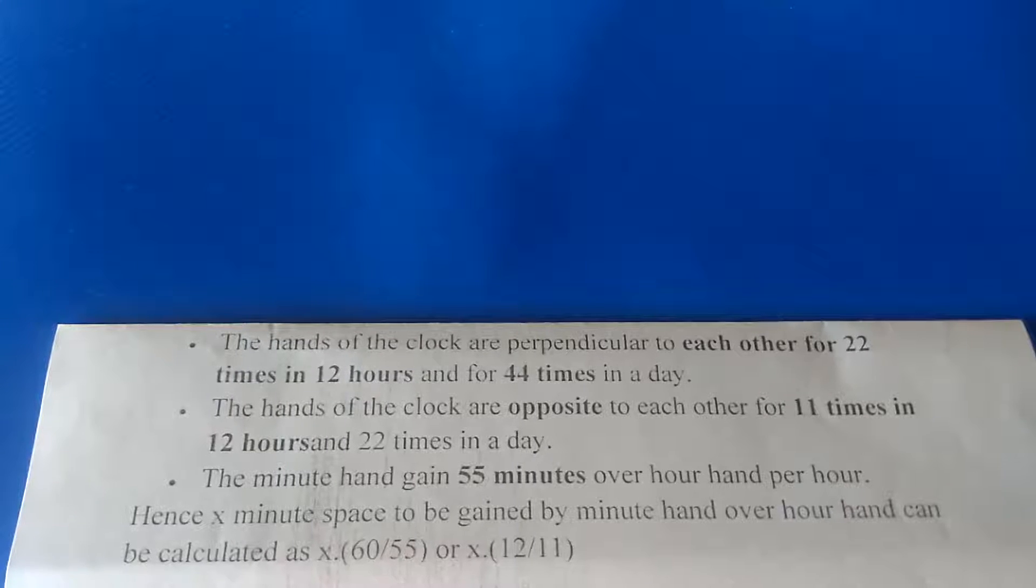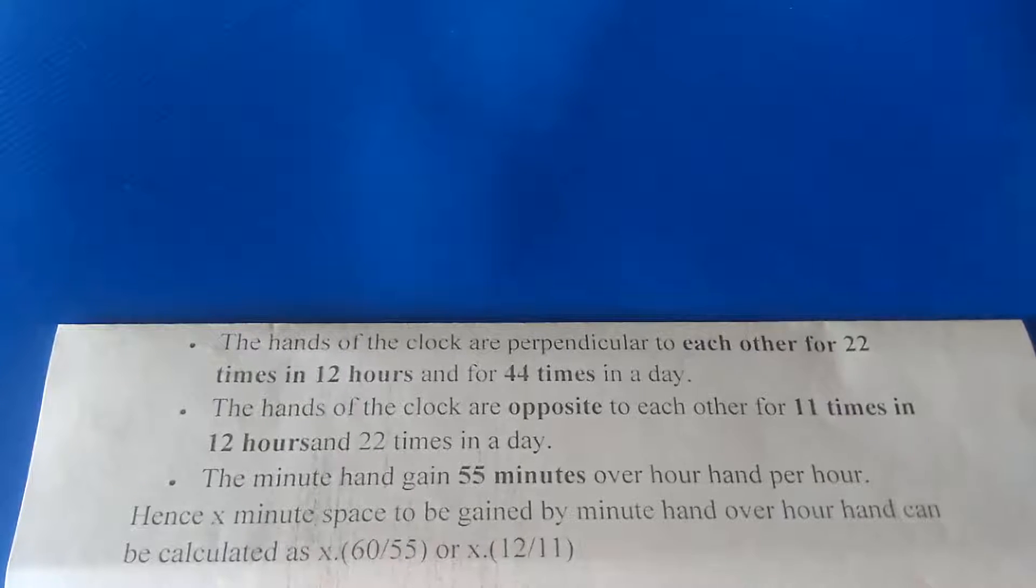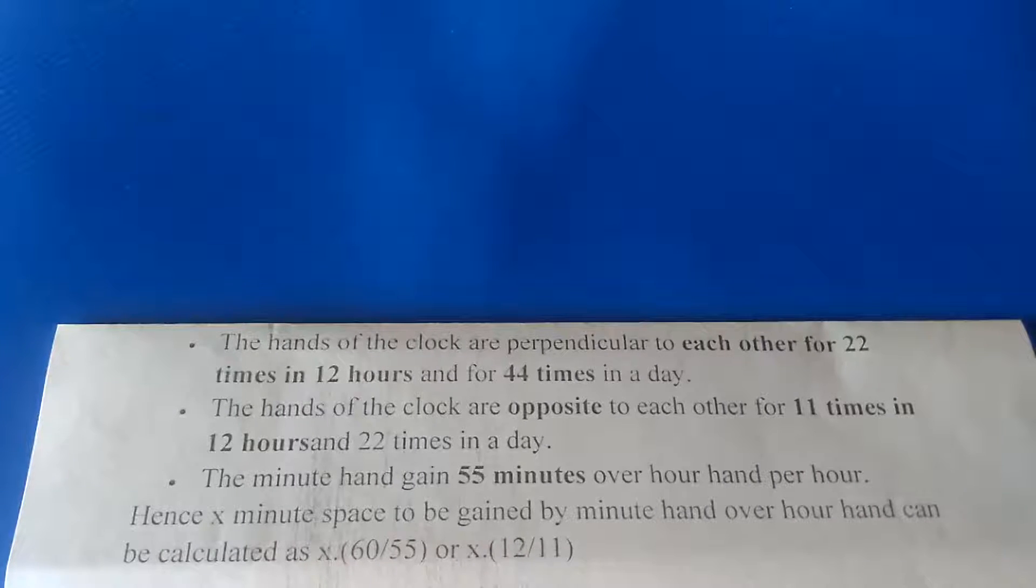In a day, the minute hand gains 55 minutes over the hour hand per hour. This means X minute space to be gained by the minute hand over the hour hand can be calculated as X times 60 over 55.